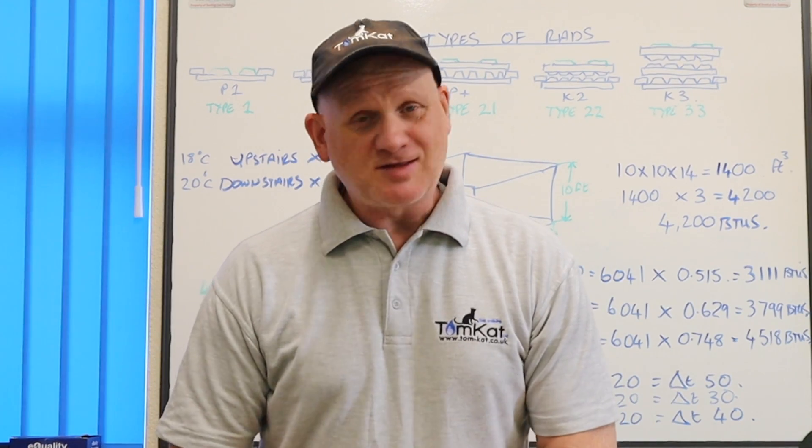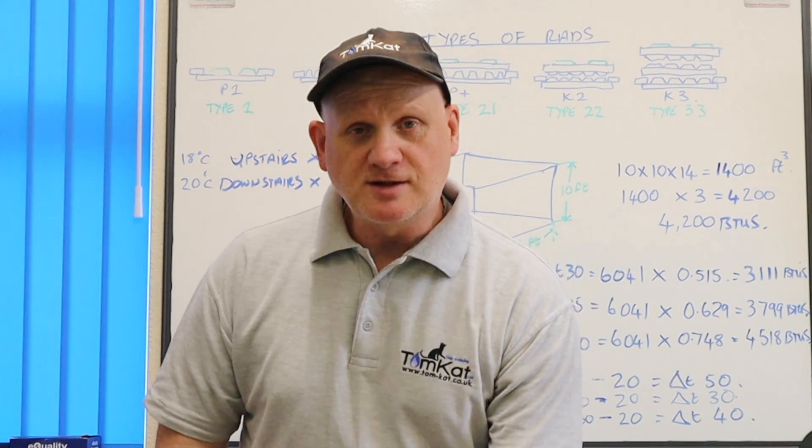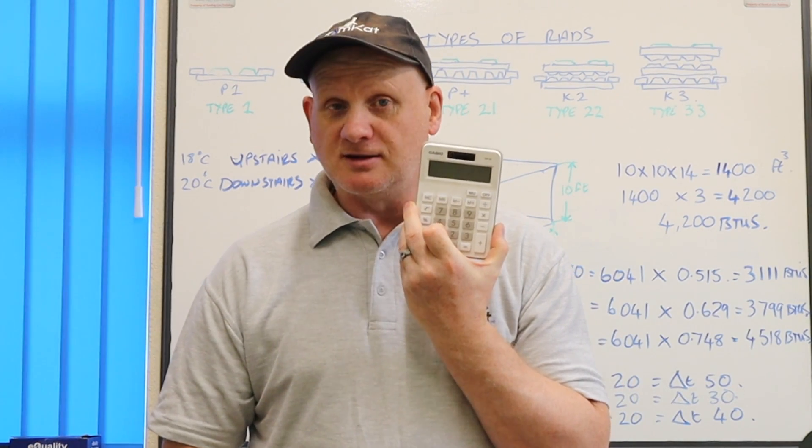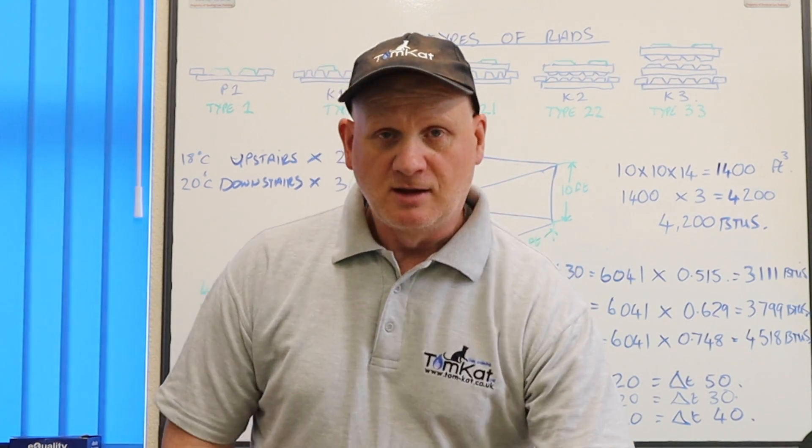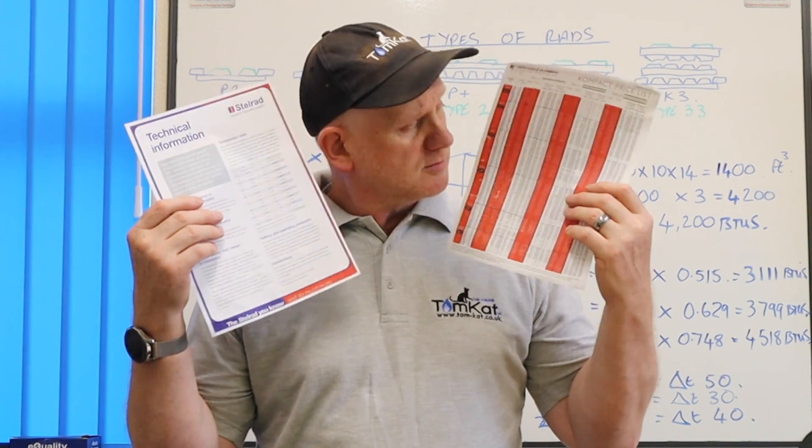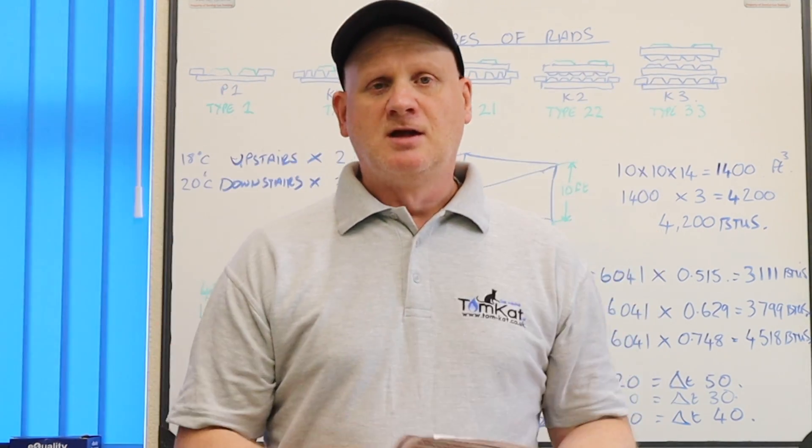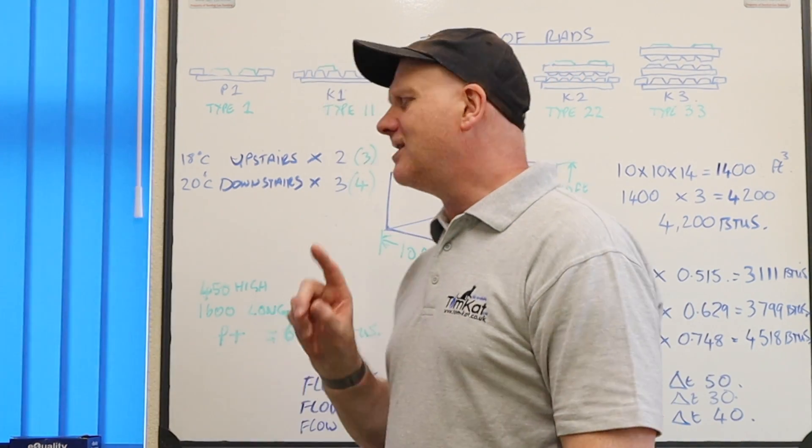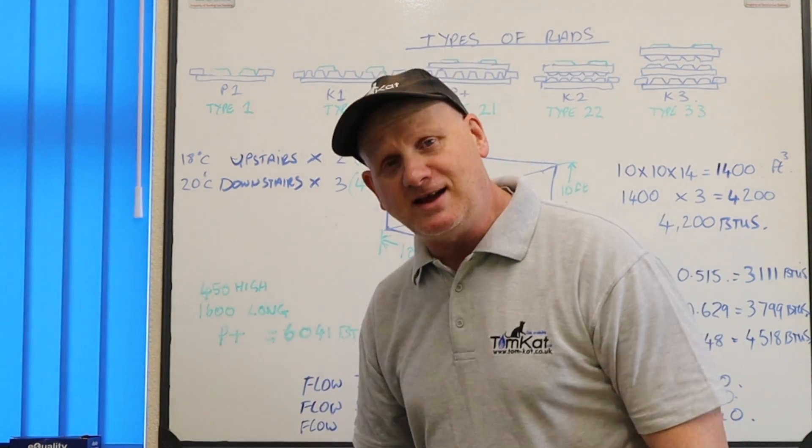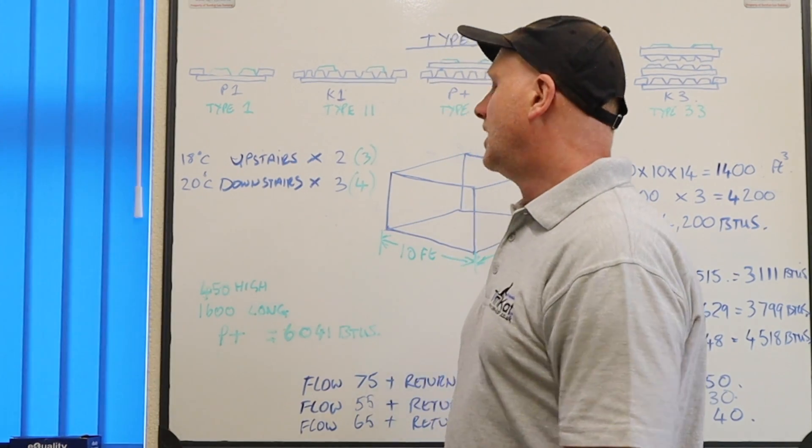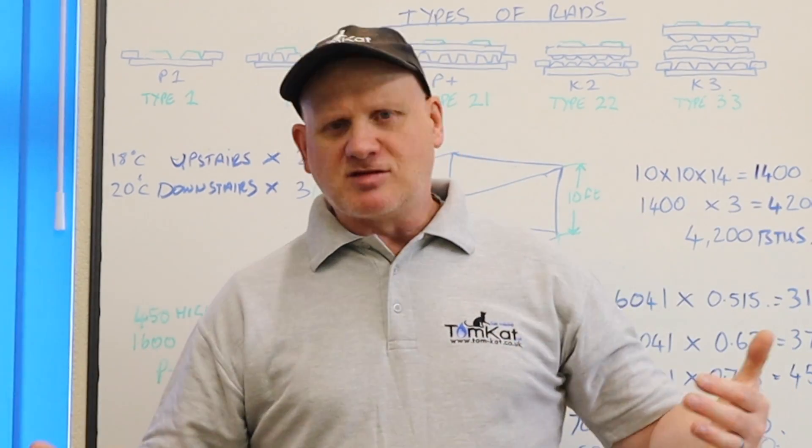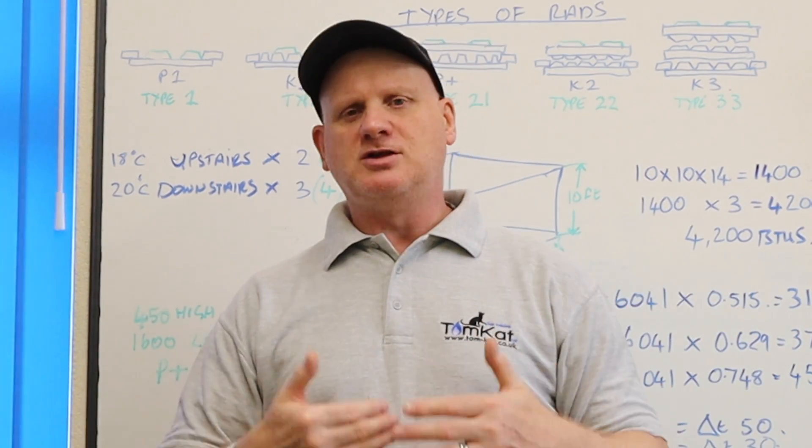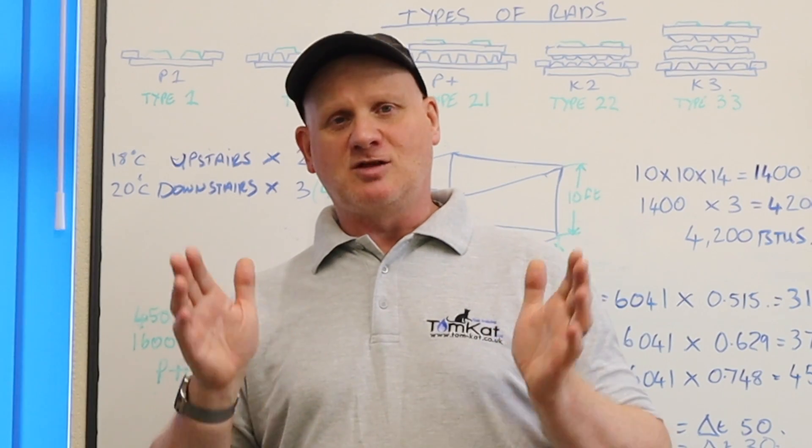Now to carry out this task there's a few little things we're going to need. We're going to need a calculator, a tape measure, a pen, some paper, and also we're going to be referring to these two little documents. So the first thing we need to do is talk about the different types of radiators you could find in your house. Radiators can have fins on the back or no fins on the back.